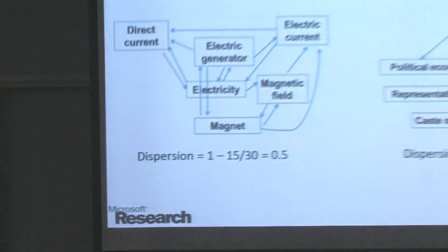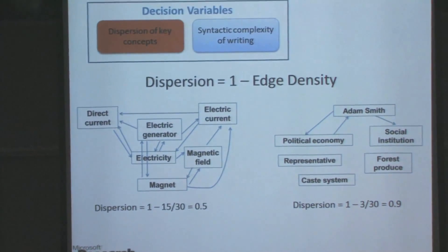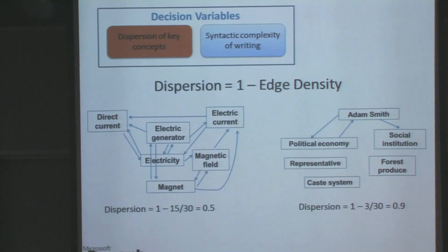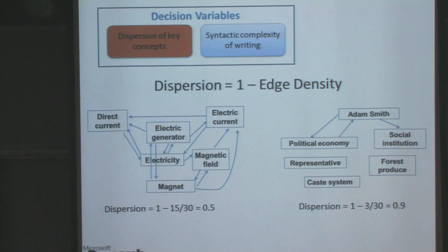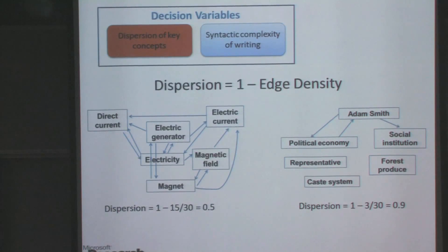Once you have a graph on concepts, dispersion can be defined as essentially one minus the edge density in this graph. Does the graph come from the textbook or from outside knowledge? In fact, it's both — we make use of the textbook as well as outside knowledge. The concept relationship, at least the way we define it, is capturing the relationship in the real world.